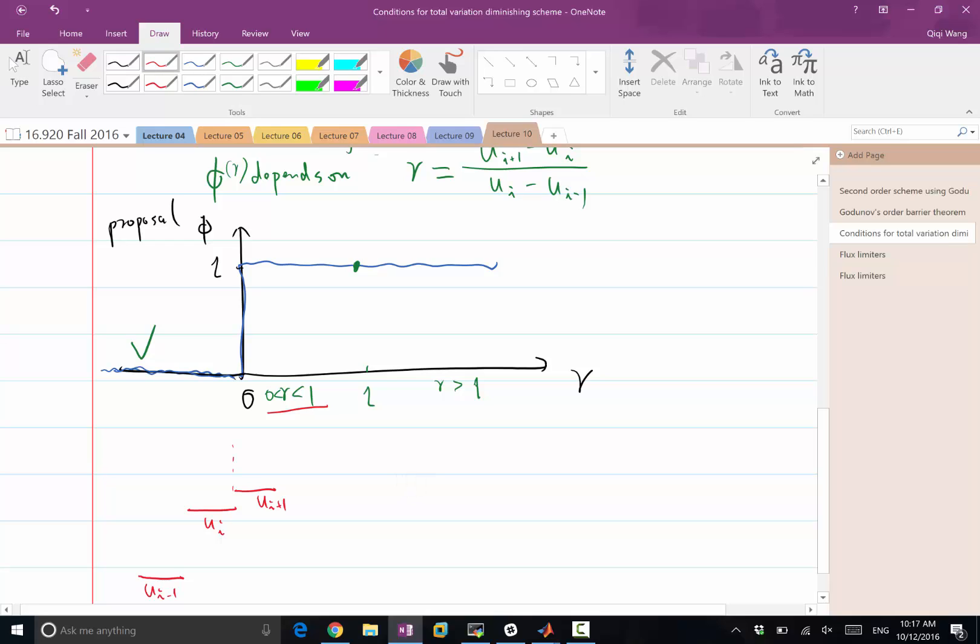Okay, so the question is, when I want to reconstruct the solution at r plus half using ui minus 1 and ui, how should I guarantee that the solution would never overshoot to the existing maximum or minimum? The proposal we had before, the blue proposal, is whenever r is greater than 0, which is the case, we are performing a linear reconstruction up to here. Would that guarantee a non-increasing local maximum? No, because the ui plus 1 could possibly be a local maximum, right? So in this particular case, φ equal to 1 actually does not guarantee monotonicity.